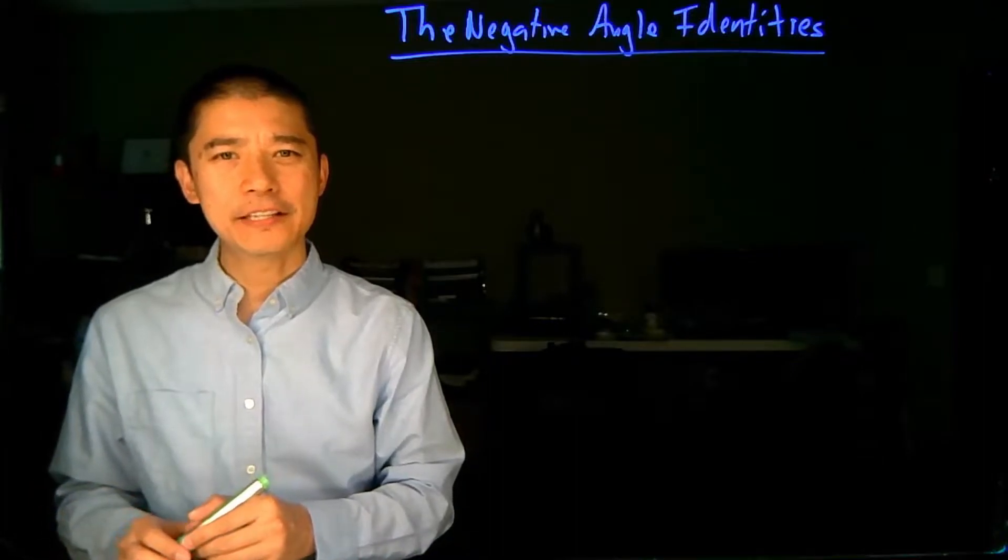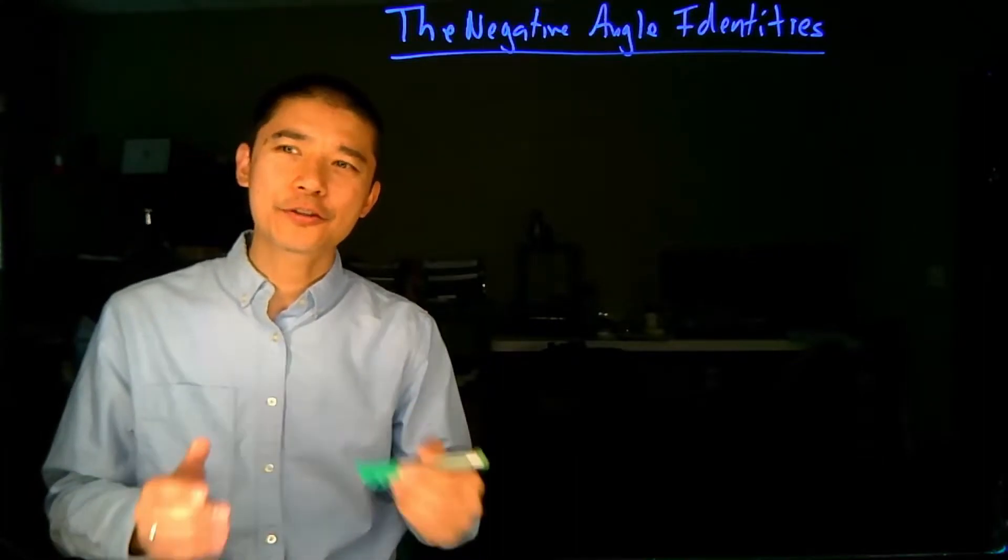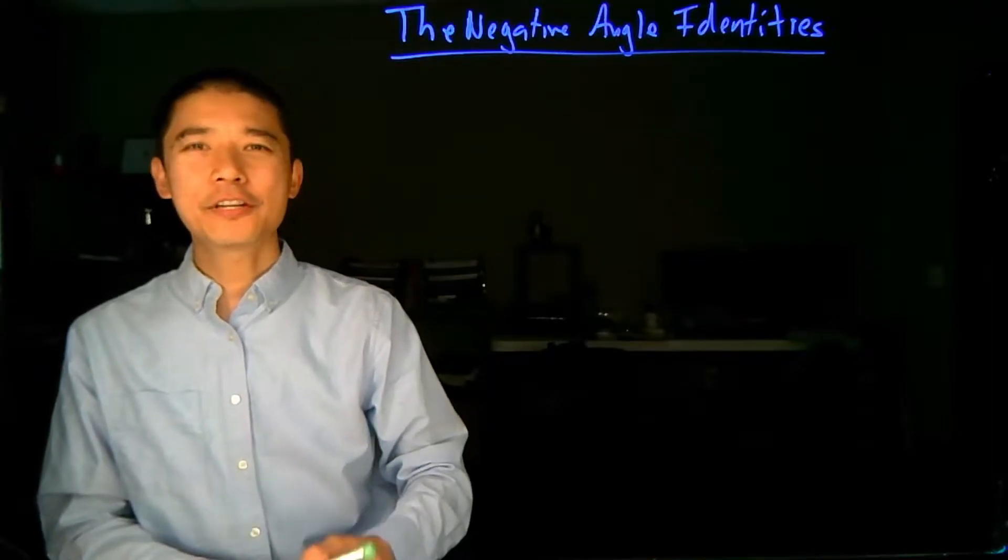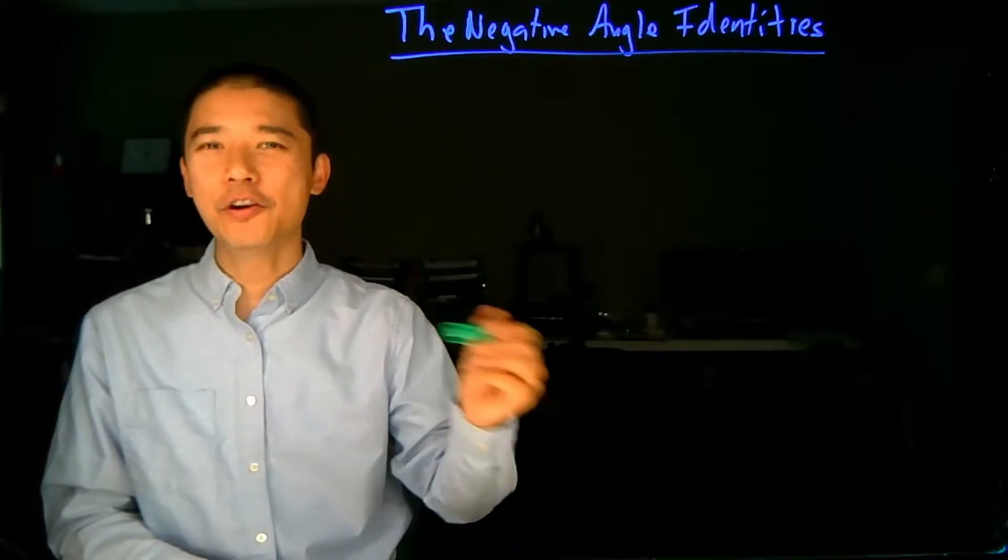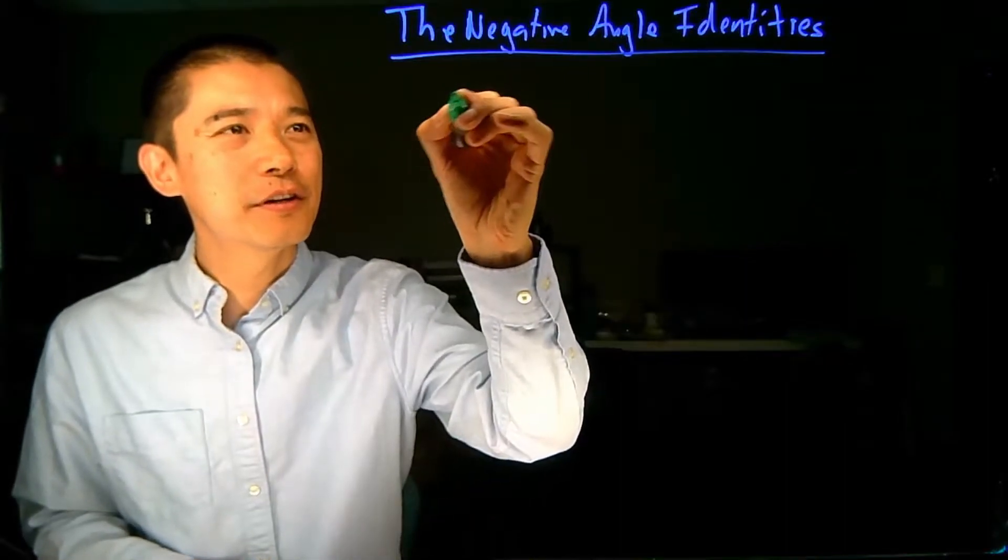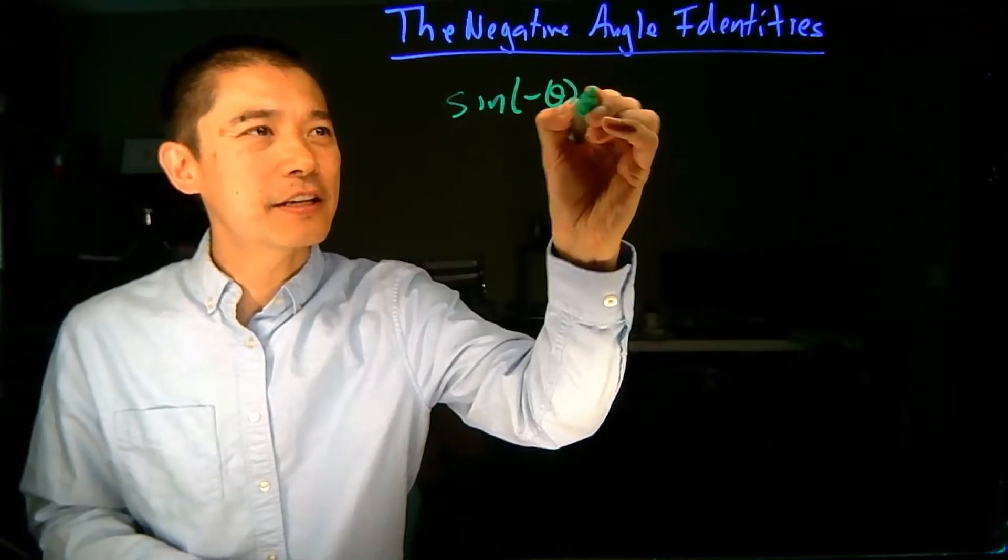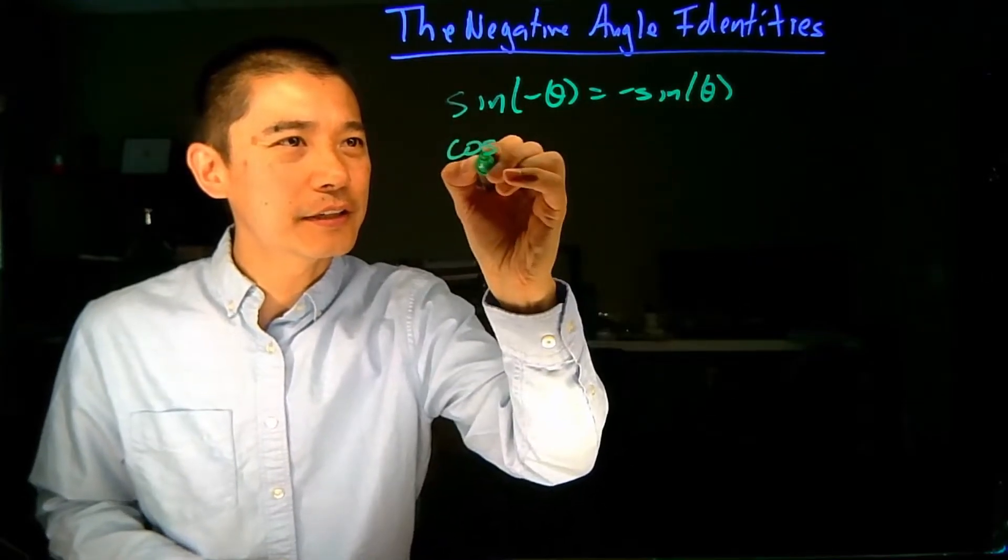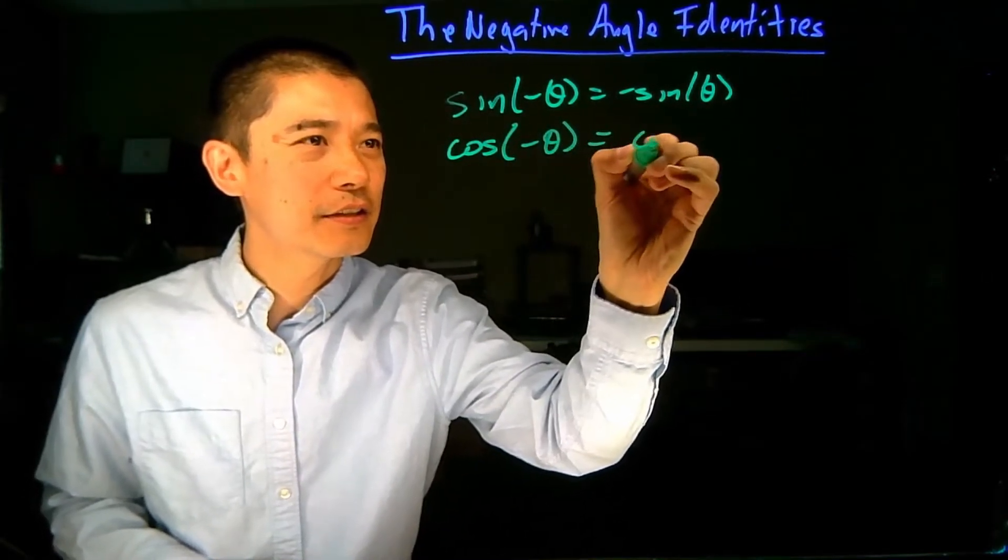Just as the sine and cosine functions had negative angle identities, the other trigonometric functions also have negative angle identities. And in fact, you can get those negative angle identities knowing the sine and cosine functions. So, sine of negative theta is negative sine of theta, and cosine of negative theta is cosine of theta.